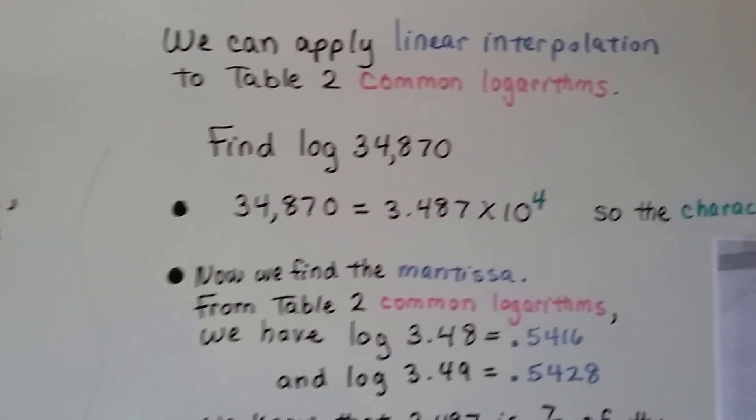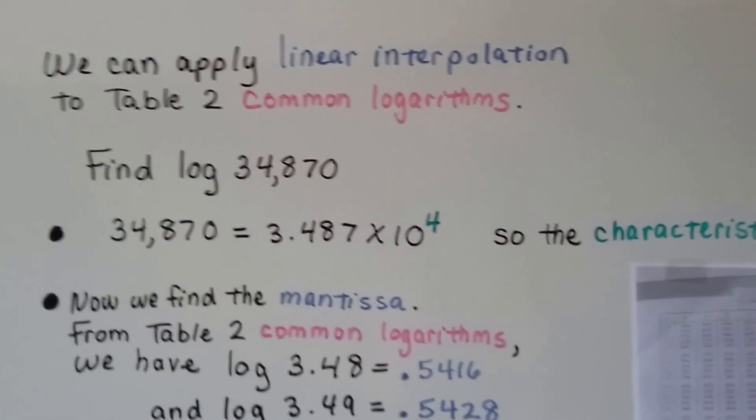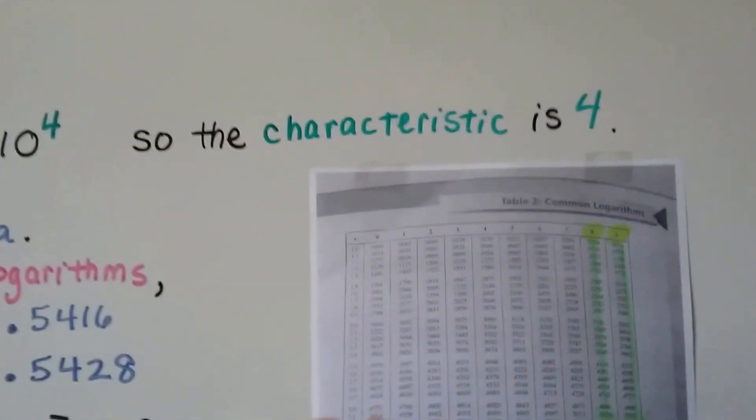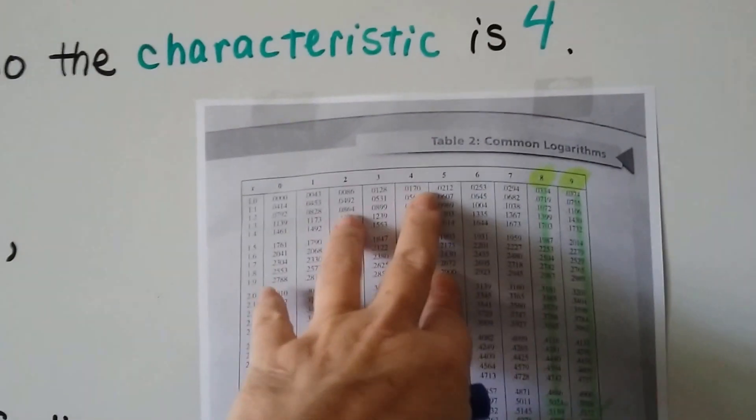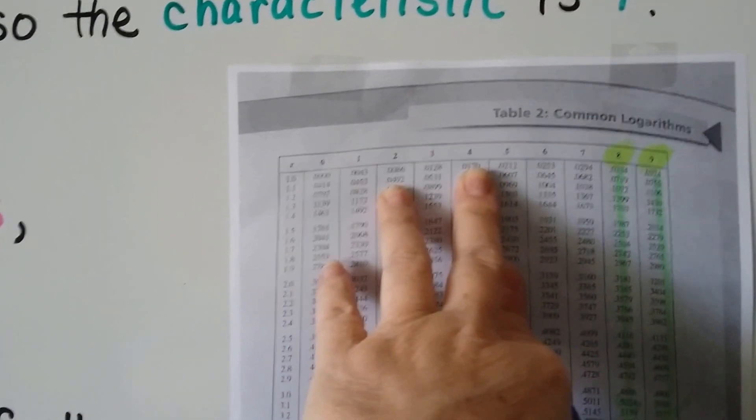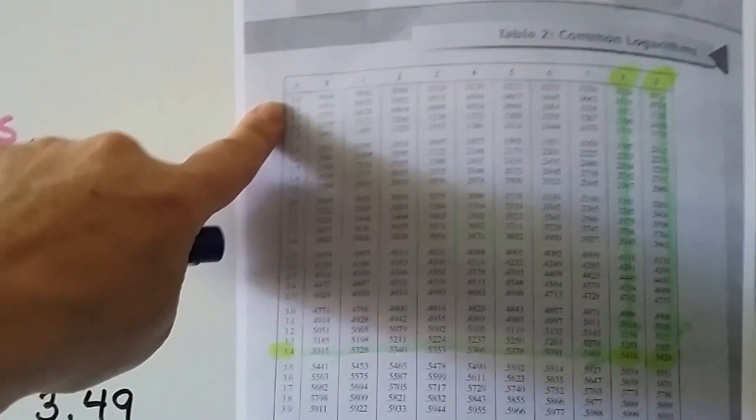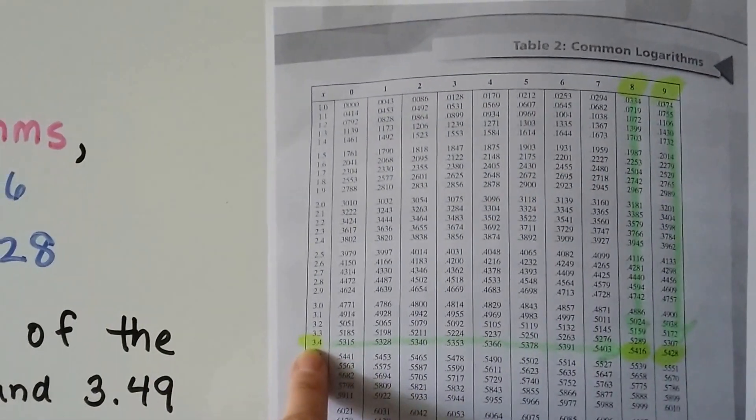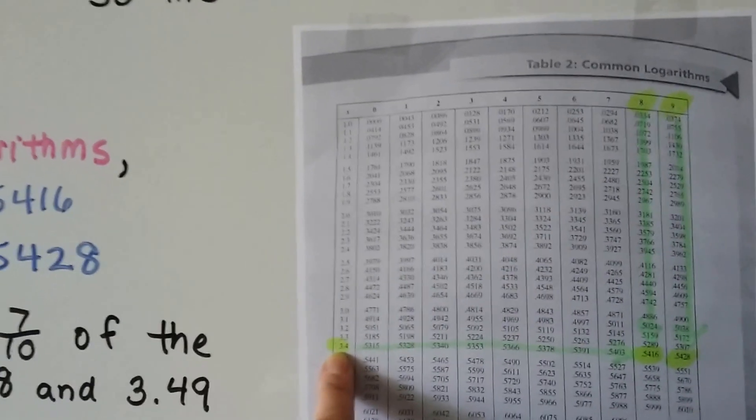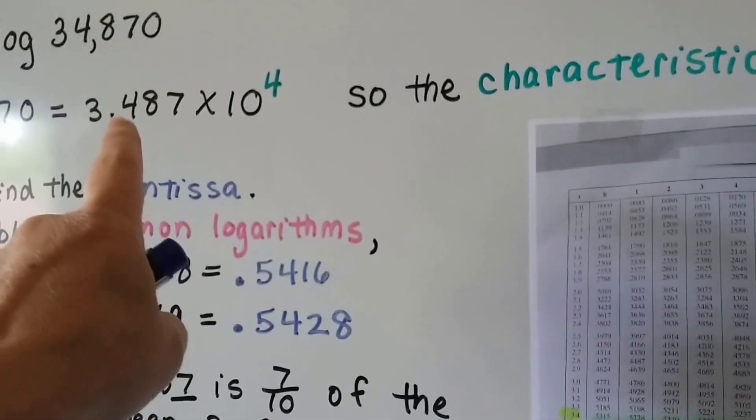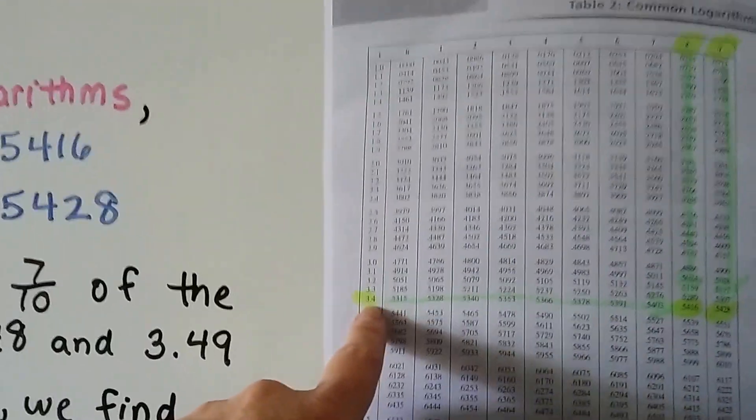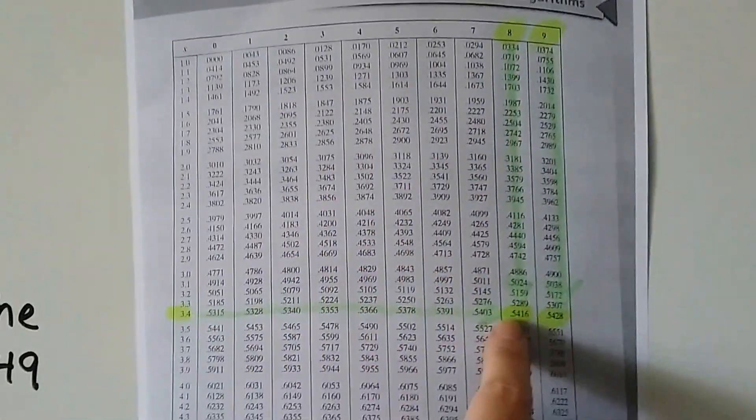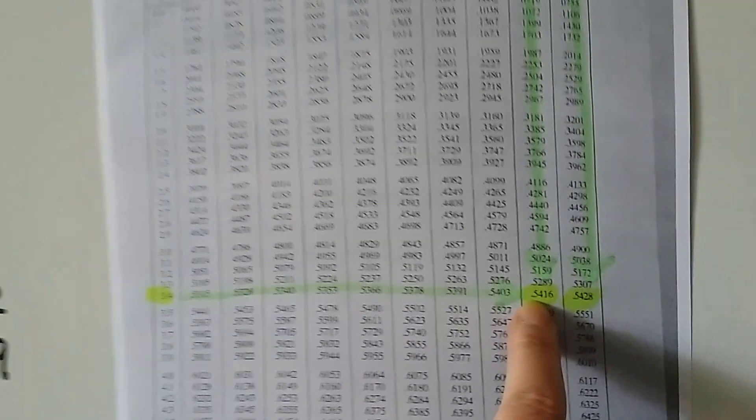We can apply linear interpolation to table 2 common logarithms that we've been using from the appendix of the textbook. You find the first value down here. We've got 3.4. If we're looking for 3.48, we find the 3.4 and we follow it along to column 8. And we get 0.5416.